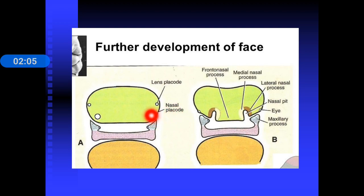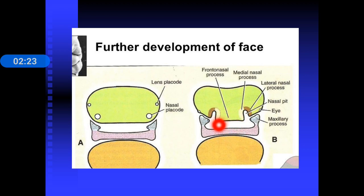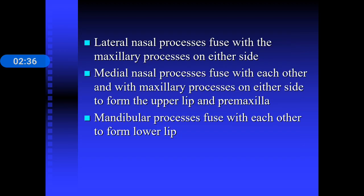Here you can see the nasal placard has become a nasal pit. Two new regions appear: the medial portion is known as the medial nasal process, and the lateral one is the lateral nasal process. You can also see the maxillary process and the mandibular process which have joined together. The lateral nasal processes fuse with the maxillary process on either side. The medial nasal processes fuse with each other and with the maxillary processes on either side to form the upper lip and the premaxilla. The fusion with each other forms the premaxilla and the central portion of the upper lip, while the mandibular processes fuse with each other to form the lower lip.